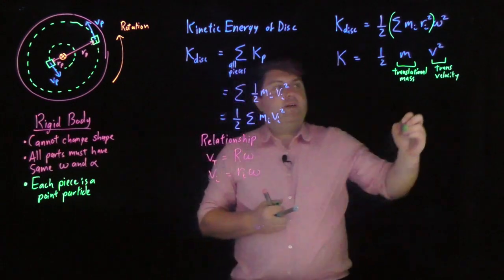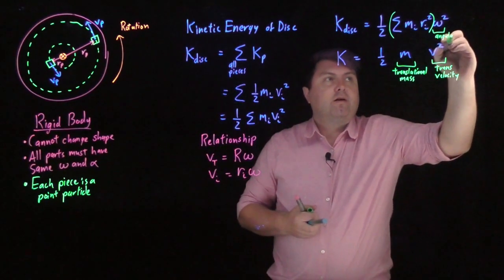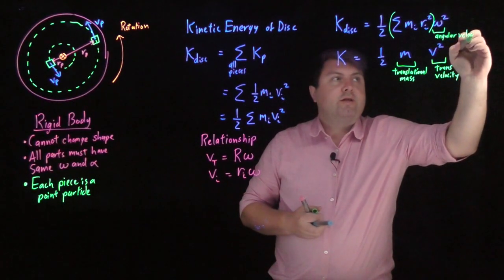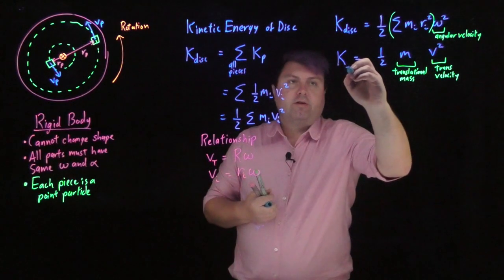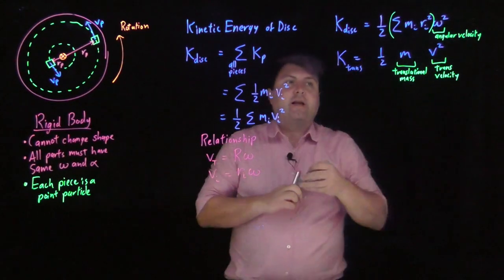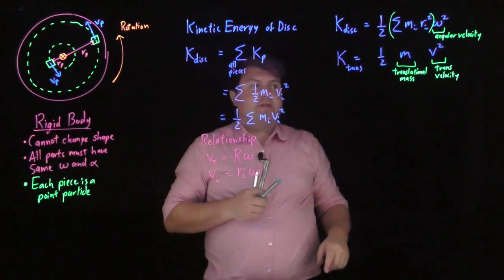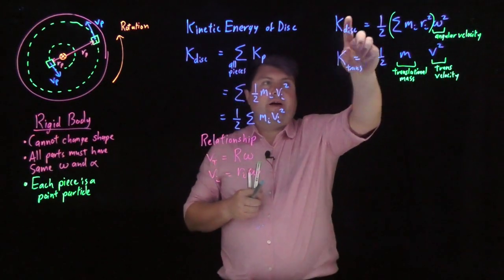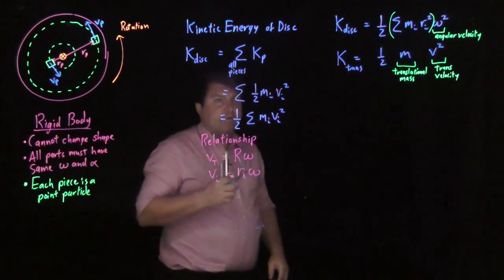Well, looking up here, this is the angular velocity. So for my translational kinetic energy, I have one-half times the translational mass times the translational velocity squared. Here I have one-half times something times the angular velocity squared.